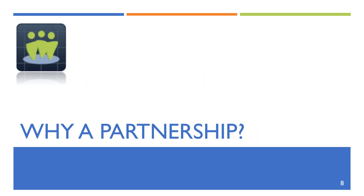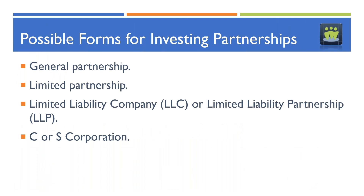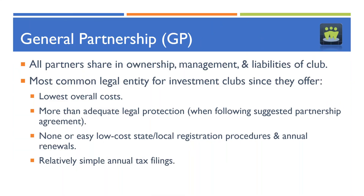People who want to start an investment club want to understand what's the appropriate way to join together and why is the partnership entity most often recommended. There are a number of different entities that investing groups could form under: a general partnership, limited partnerships, limited liability companies (LLCs), limited liability partnerships (LLPs), and C or S corporations.